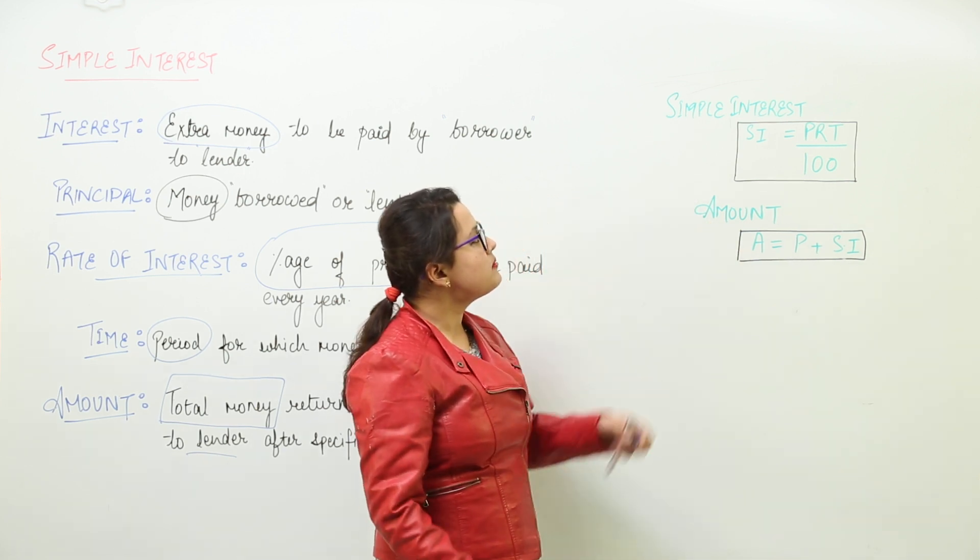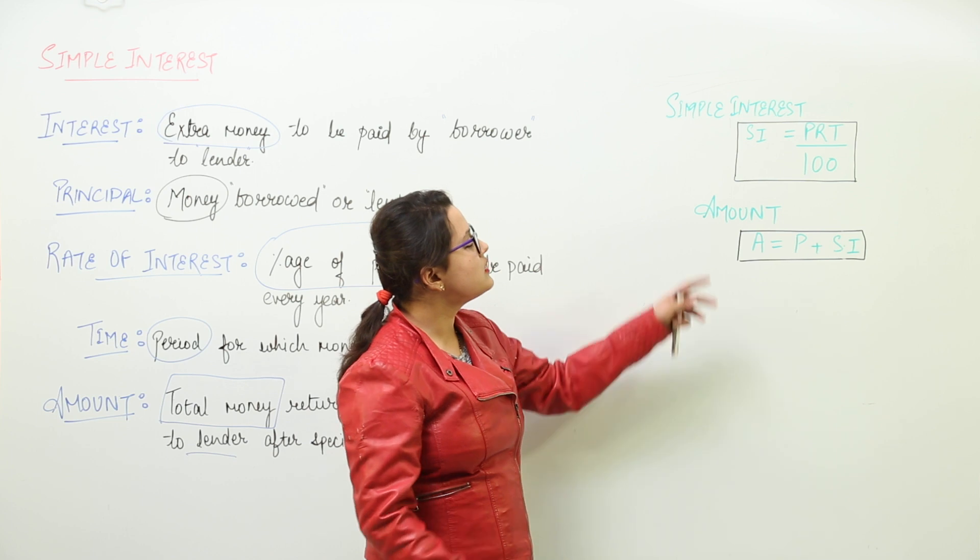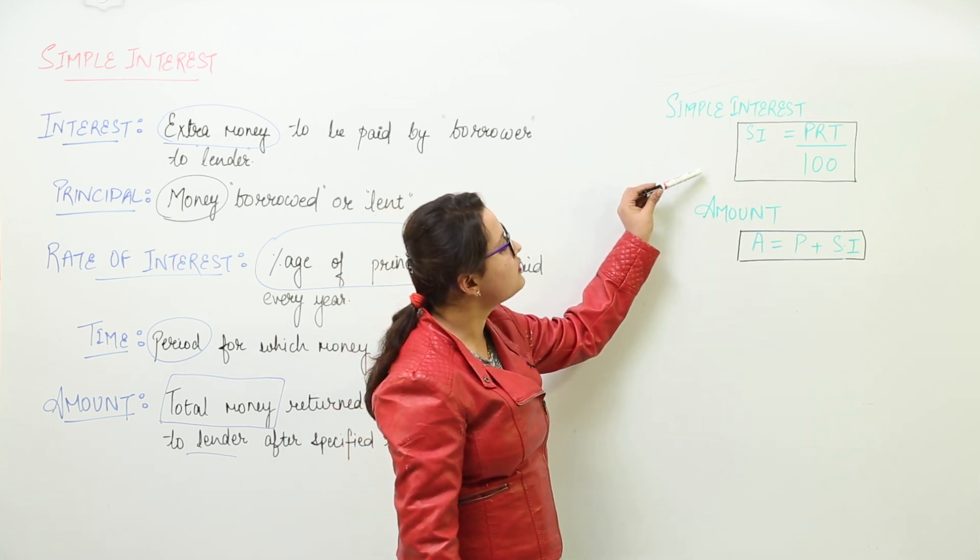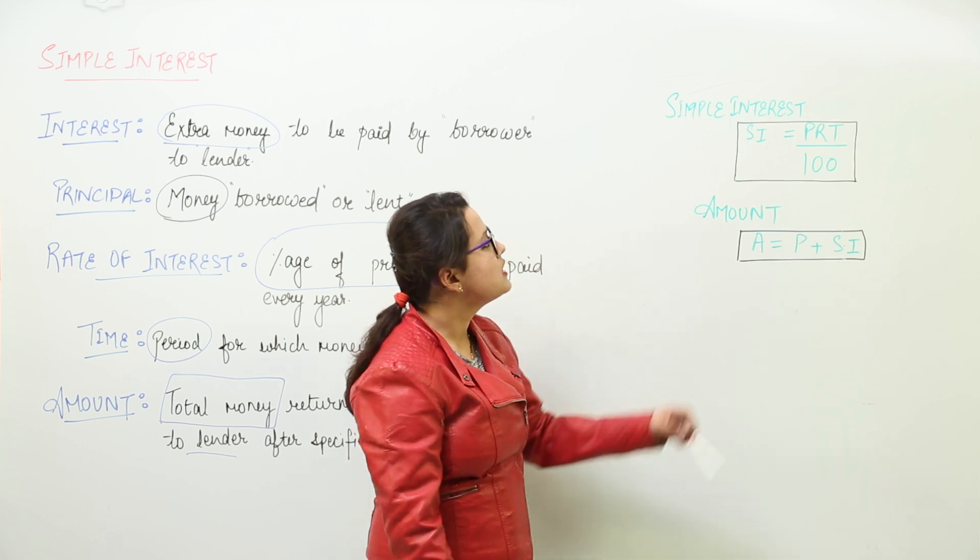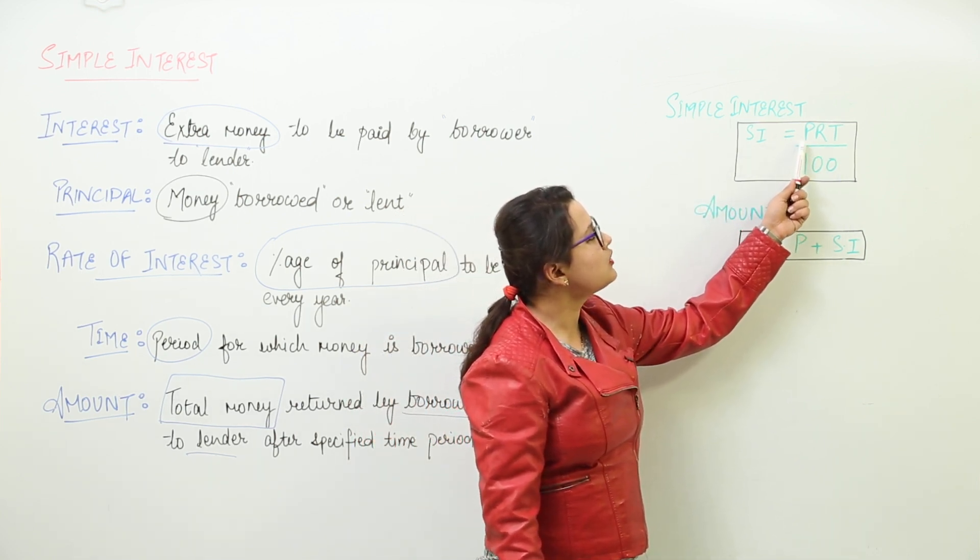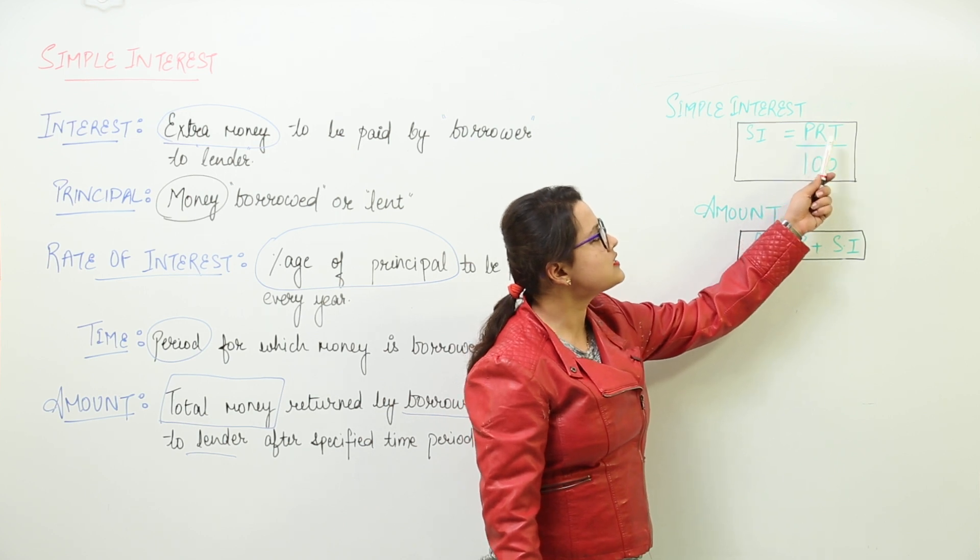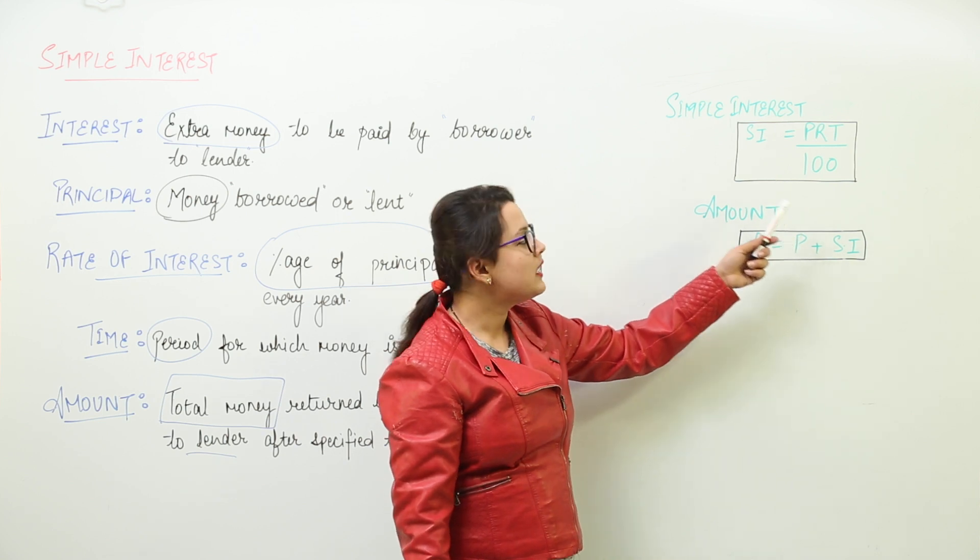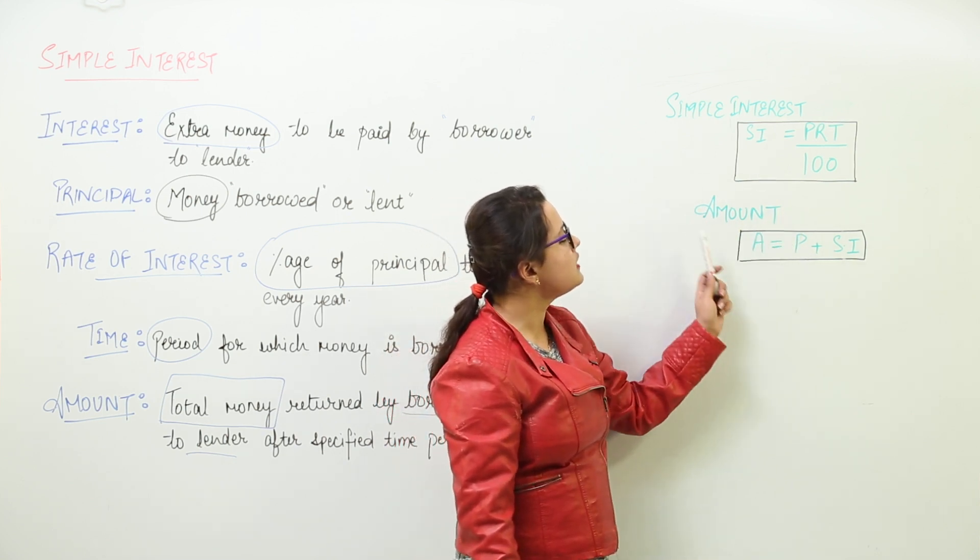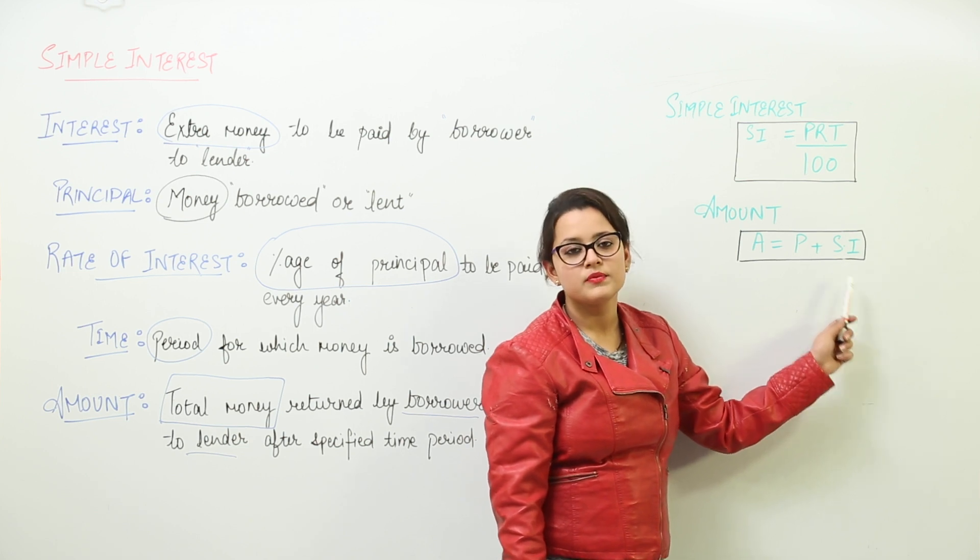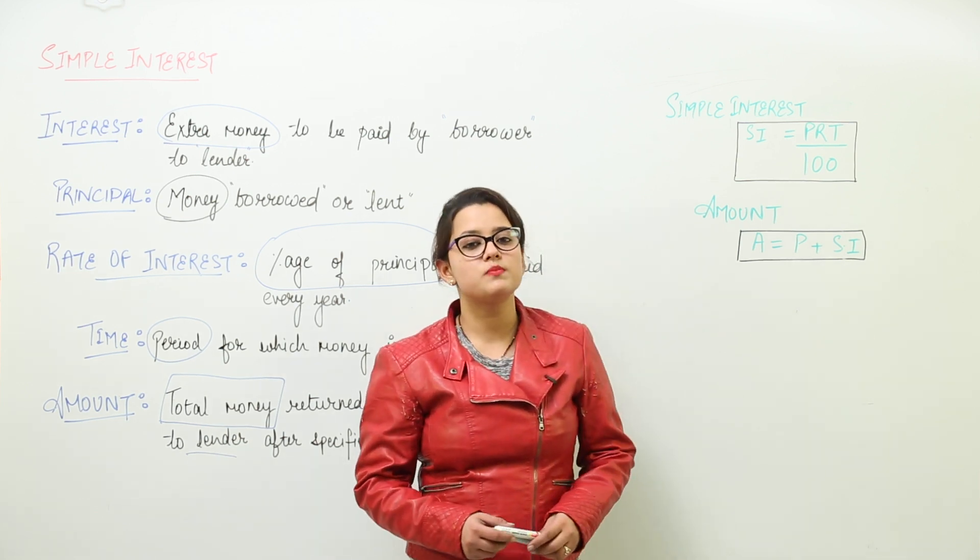For calculating simple interest, we have these simple two formulas. One is for the simple interest, the other one is for the amount. The simple interest is equal to PRT, the product of principal, rate of interest, and time period, whole divided by 100. And the amount is equal to the principal plus the simple interest calculated. So we will be solving some questions based on these now.